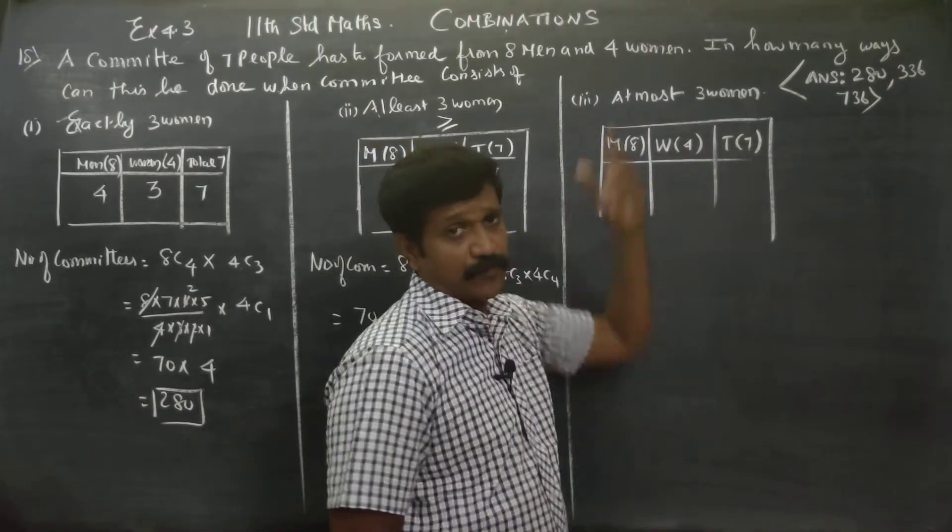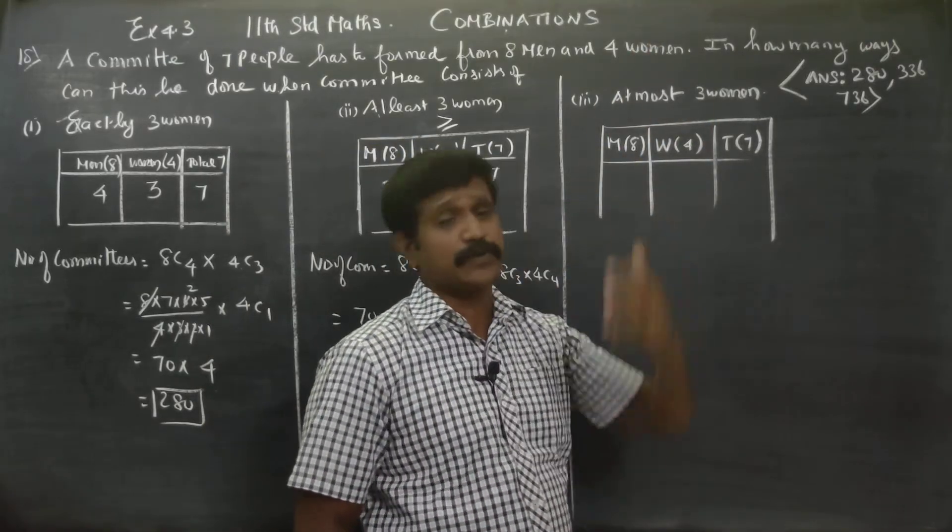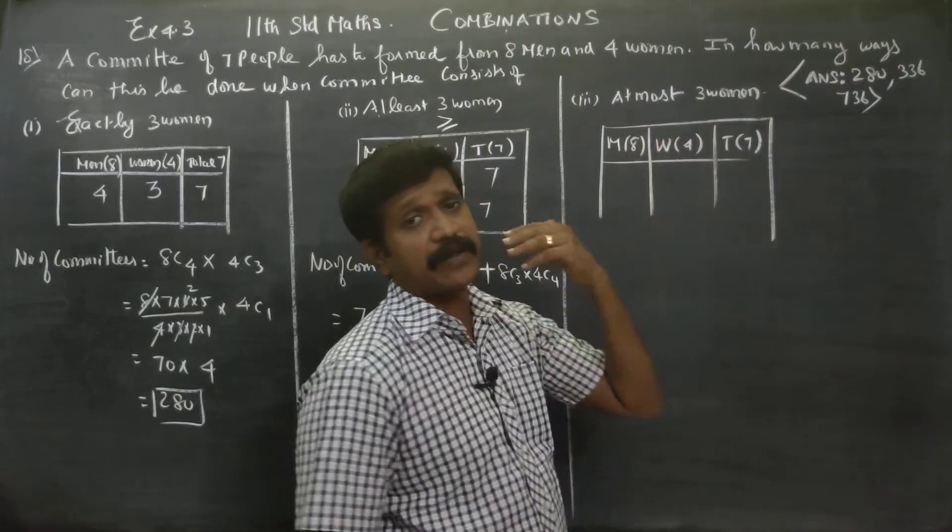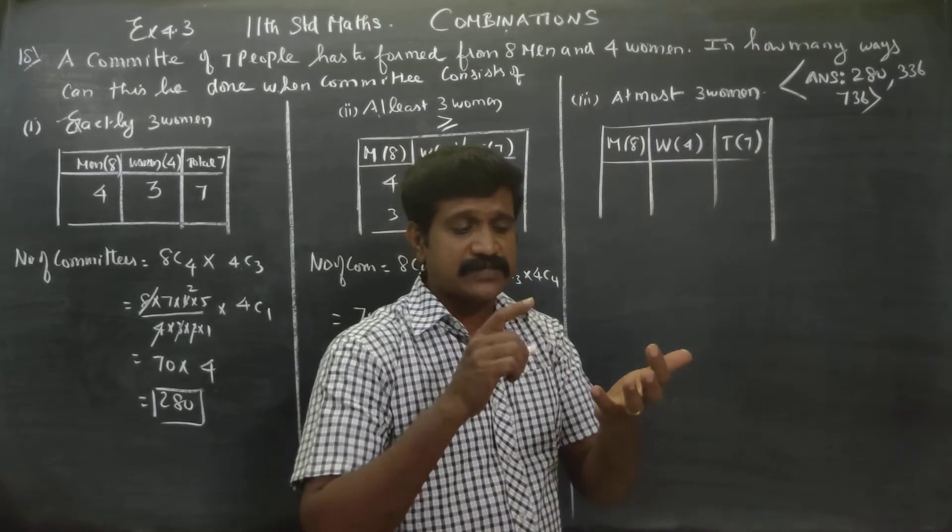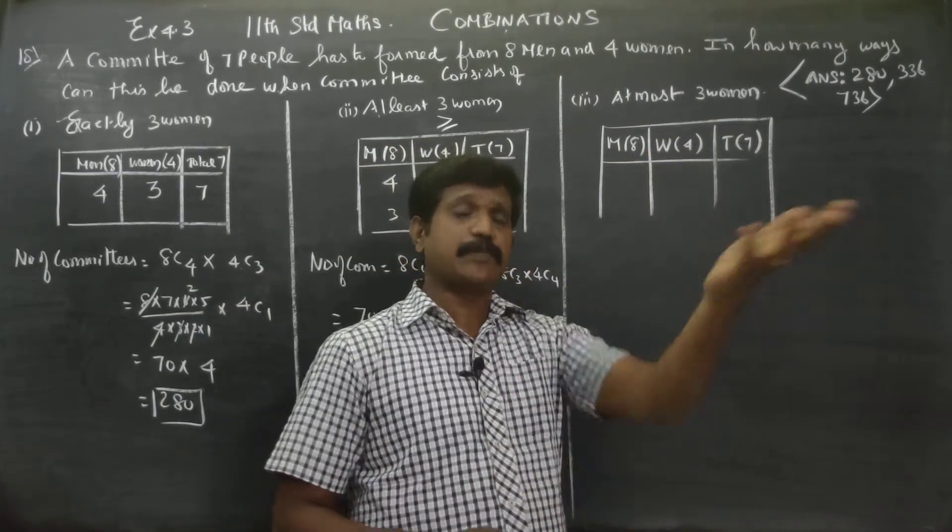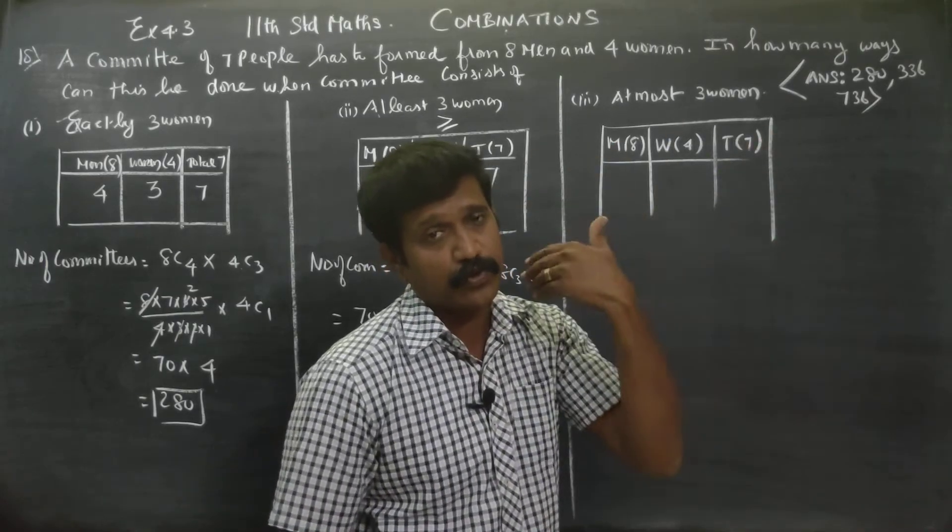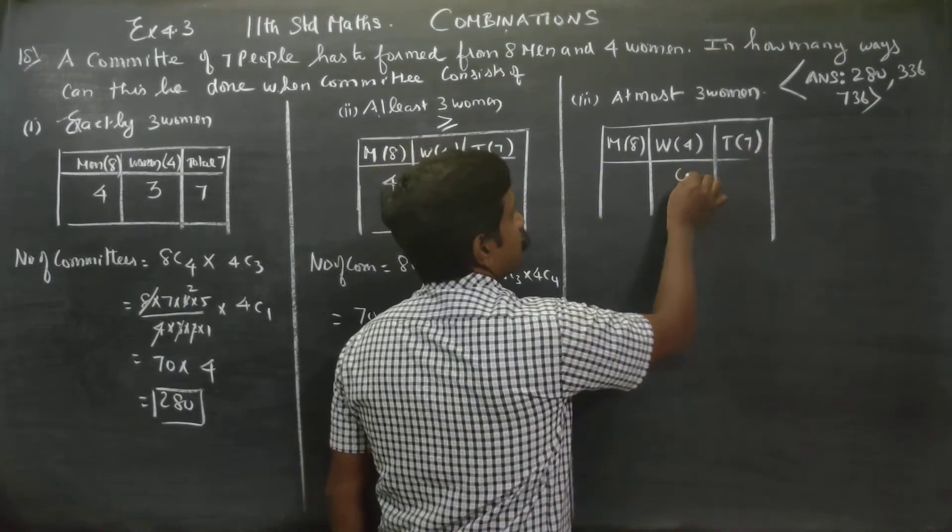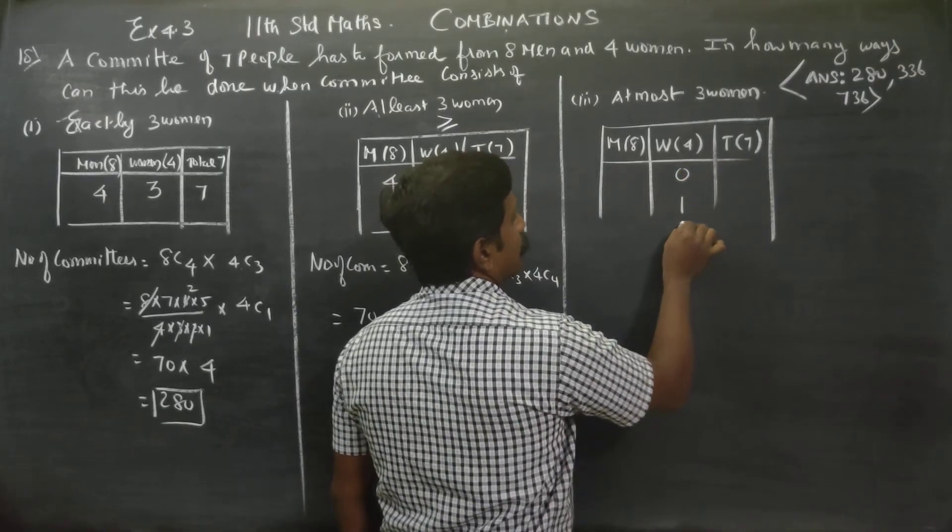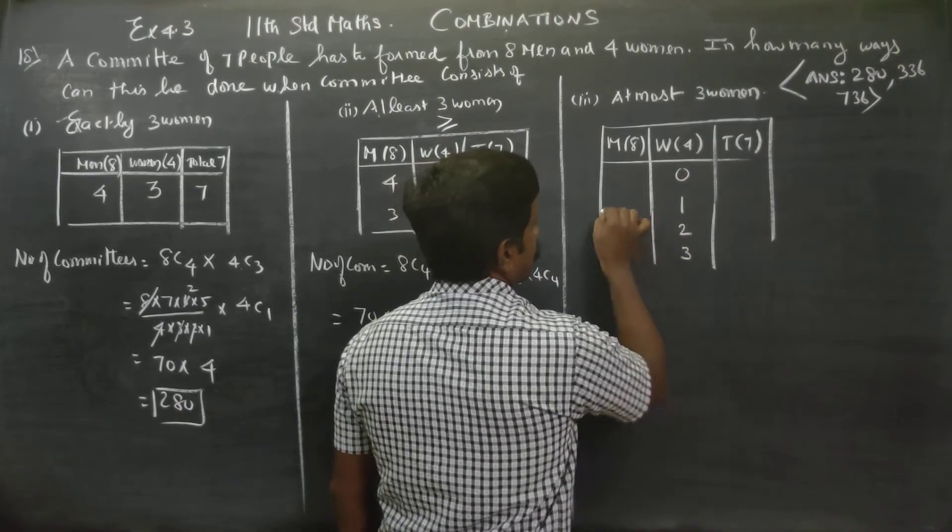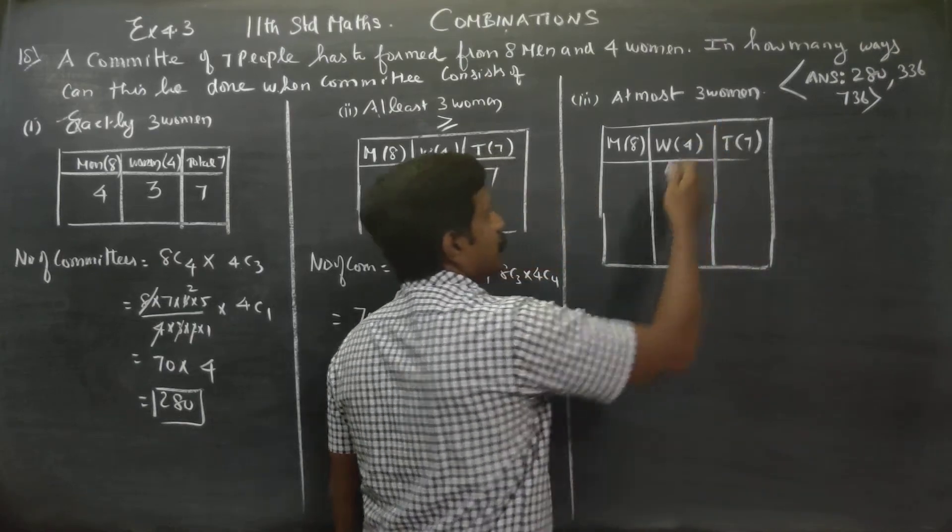At most 3 women. At most means maximum. Maximum 100 marks means you can score from 0 to 100 marks. Maximum at most 3 means it could be 0 women, 1 woman, 2 women, or 3 women.